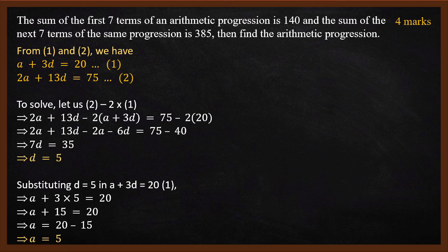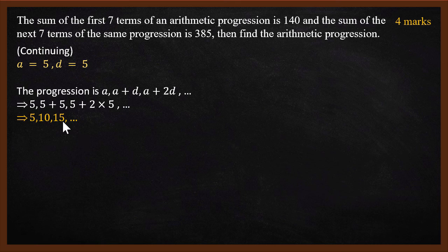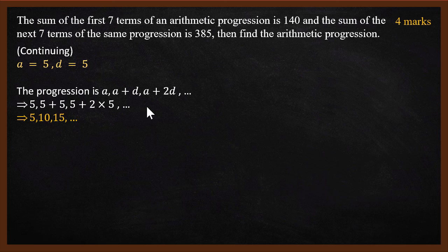In our original problem, we had to find a and d, and using pair of linear equations, we found both equal to 5. If a is 5 and d is 5, the arithmetic progression — a, a plus d, a plus 2d, and so on — can be written as 5, 5 plus 5, 5 plus 2 times 5, and so on, which is 5, 10, 15, 20, 25, and so on. So that is the arithmetic progression.